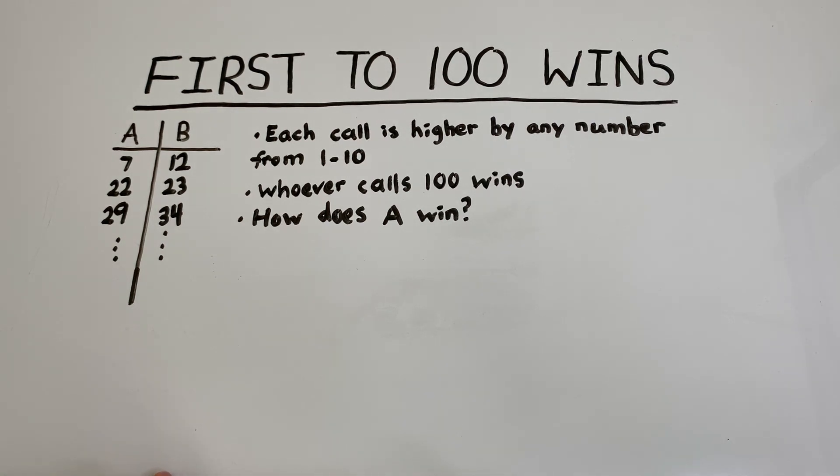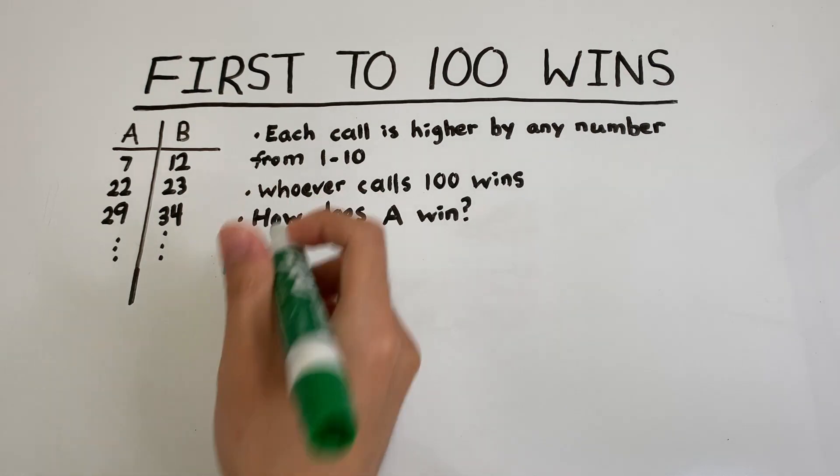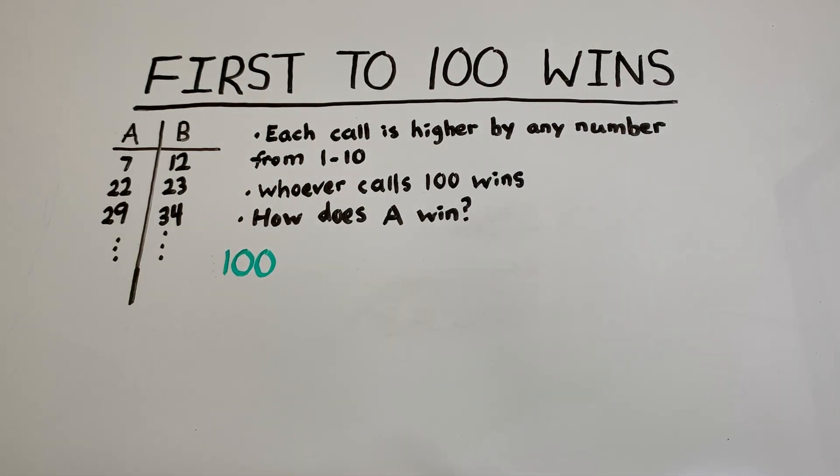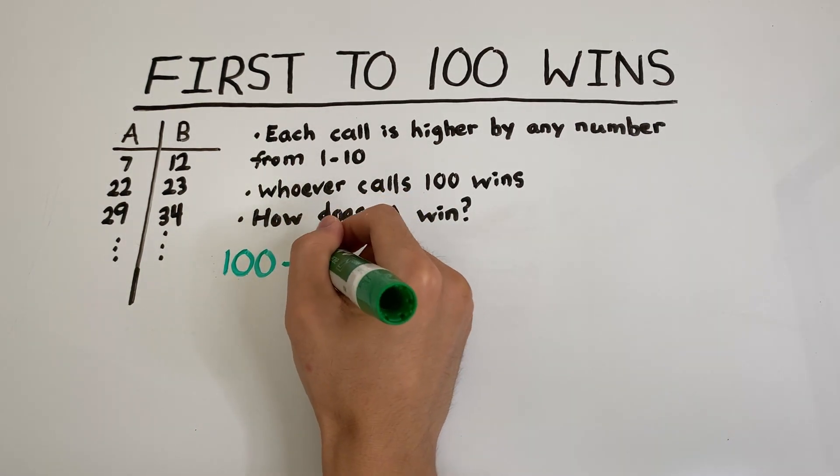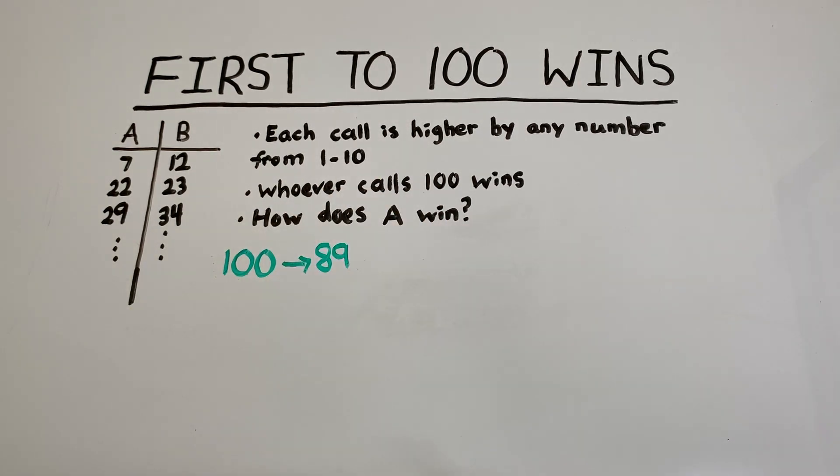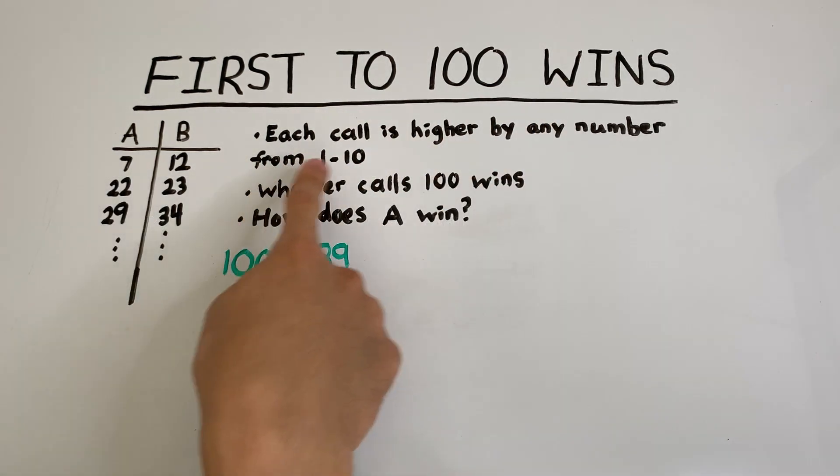We could solve this by working backwards. So if we know that A wants to call the number 100 in the end, then A would have to call the number 89 previously. Because if A called 89 before, then B can only call numbers between 90 and 99 because each call is higher by any number from 1 through 10.